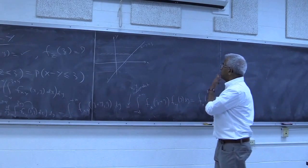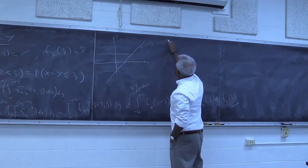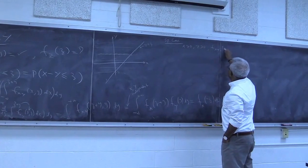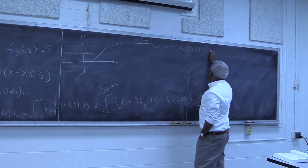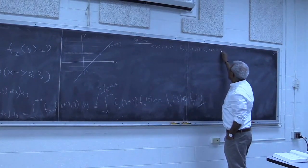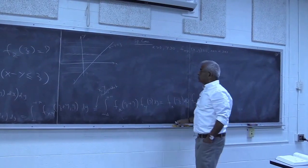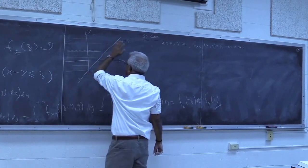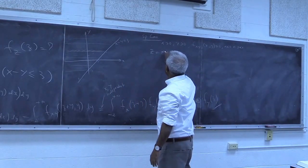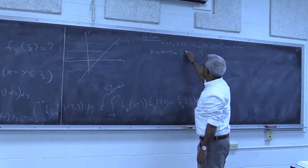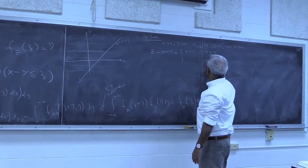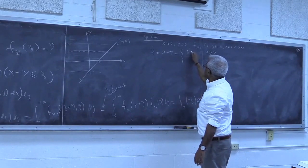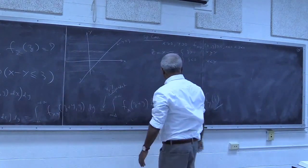Now consider a special case: suppose x is positive and y is positive — in other words, the joint density function is 0 if either x or y is negative. In that case, since x and y only occur in the first quadrant, and z = x minus y, there are two cases: x greater than y, giving z positive, and x less than y, giving z negative. We consider these two cases separately.